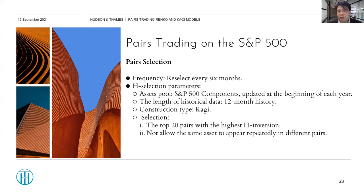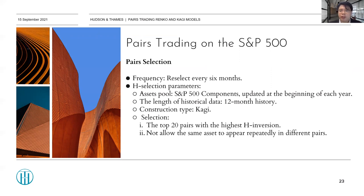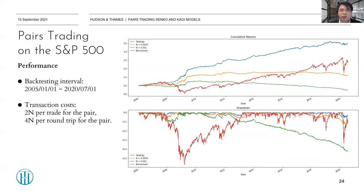Here are the detailed parameters for pair selection: pairs are selected every six months from the S&P 500 components (updated annually). We use 12 months of historical data to count each possible pair's edge inversion and choose the top 20 pairs with the highest edge inversion, not allowing the same asset to appear repeatedly — for example, if Apple already appears in chosen pairs, the next pair cannot include Apple. We conducted backtesting from 2005 to mid-2020. The results match the original paper, with transaction costs of 2N per round trip per pair.